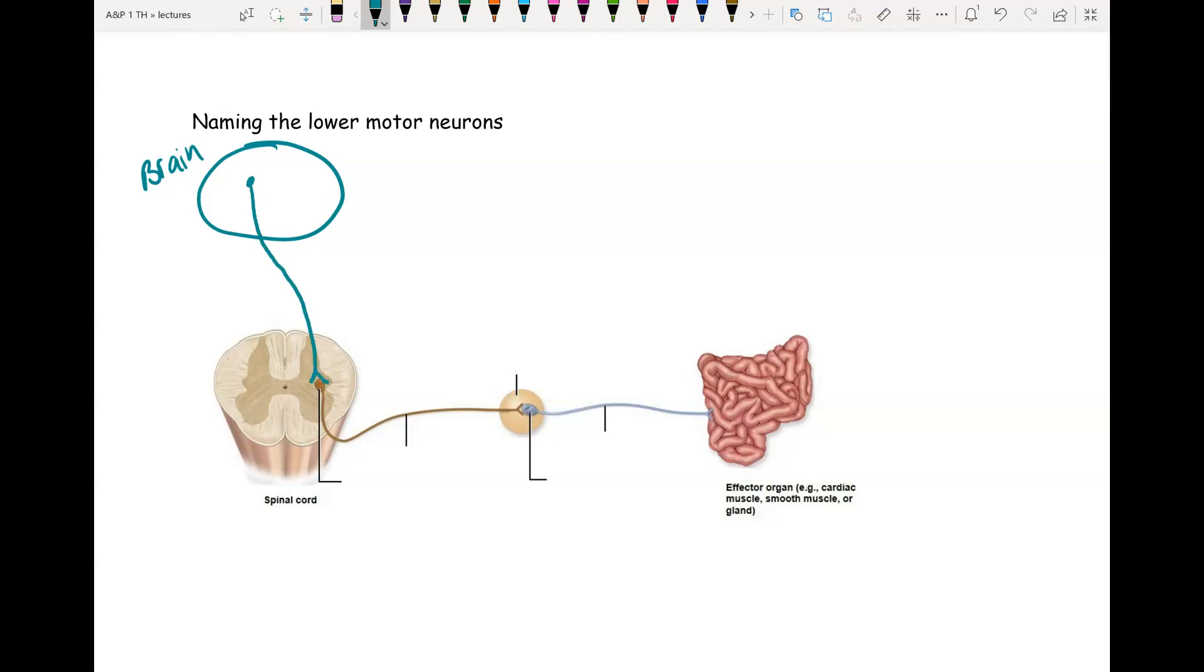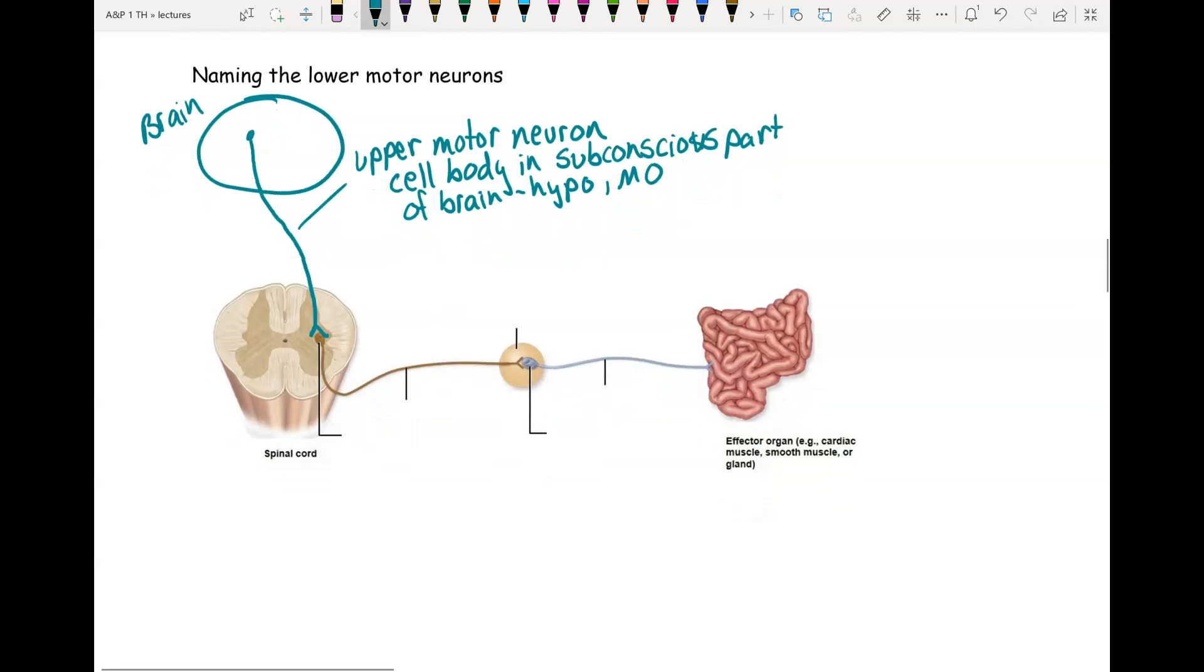So here we have an upper motor neuron. It's going to have its cell body in a subconscious part of the brain. And that could be such as the hypothalamus or the medulla oblongata would be a couple of examples. It comes down here to the lateral horn of the spine.